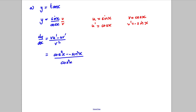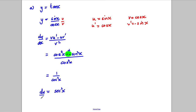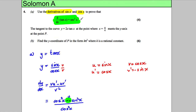Subtracting a negative makes it positive, so we get cos squared x plus sine squared x over cos squared x. We know cos squared x plus sine squared x equals 1, so this is 1 over cos squared x, which by definition is sec squared x. Therefore dy/dx equals sec squared x, which is what we were asked to prove.